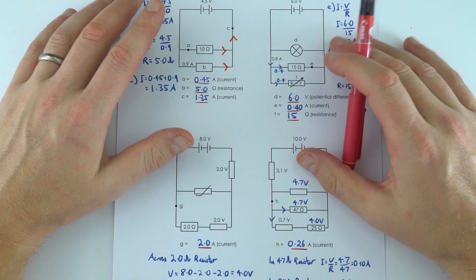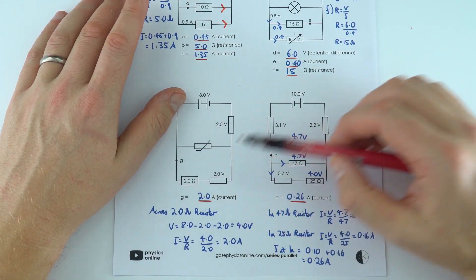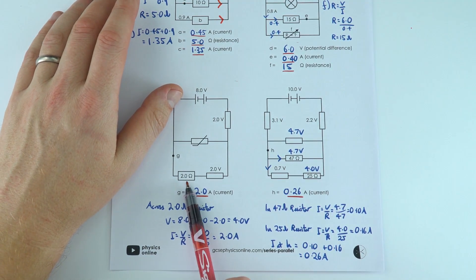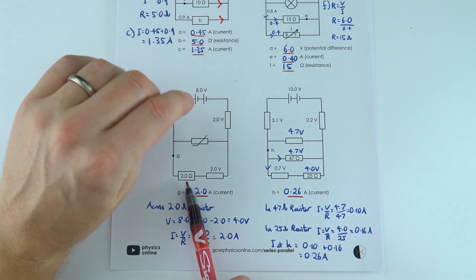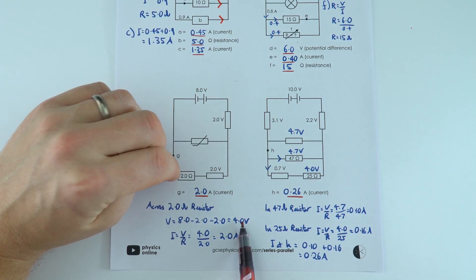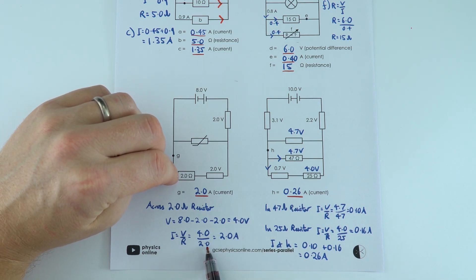And again I did exactly the same, just working around each component individually trying to find whatever it might be. So for this one over here, across the 2 ohm resistor I worked out the potential difference as 8 minus 2 minus 2 which is 4. And then I is equal to V over R, 4 volts divided by 2 ohms gives the value of 2 amps.